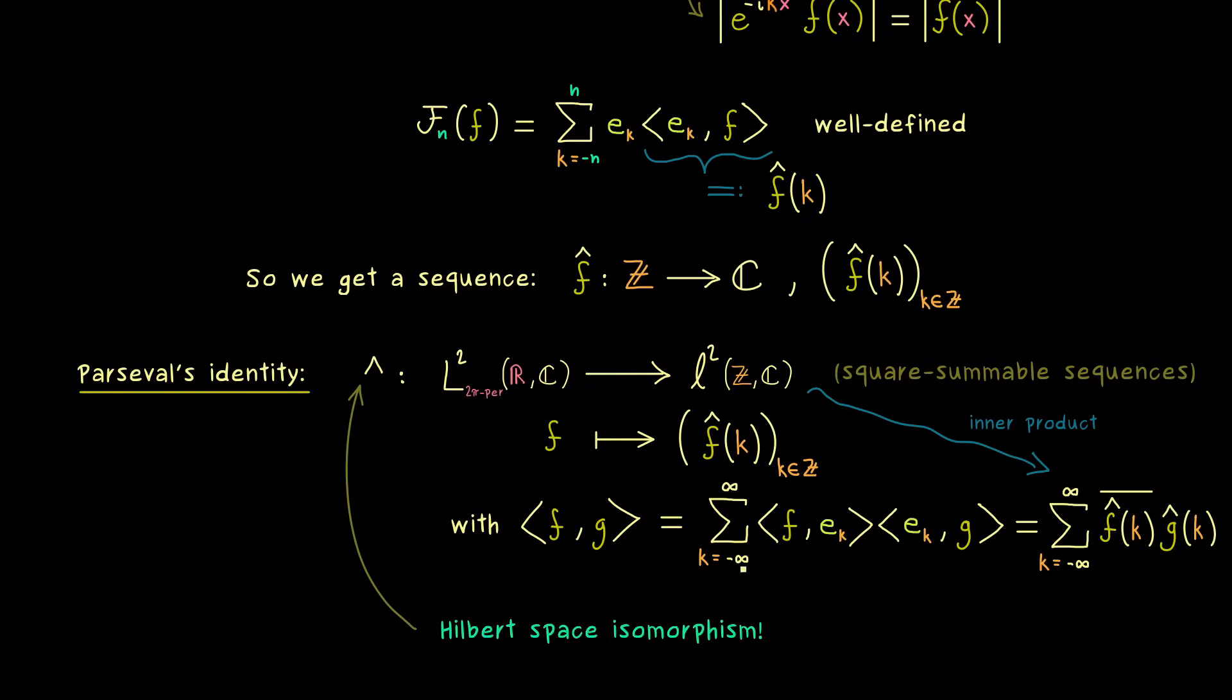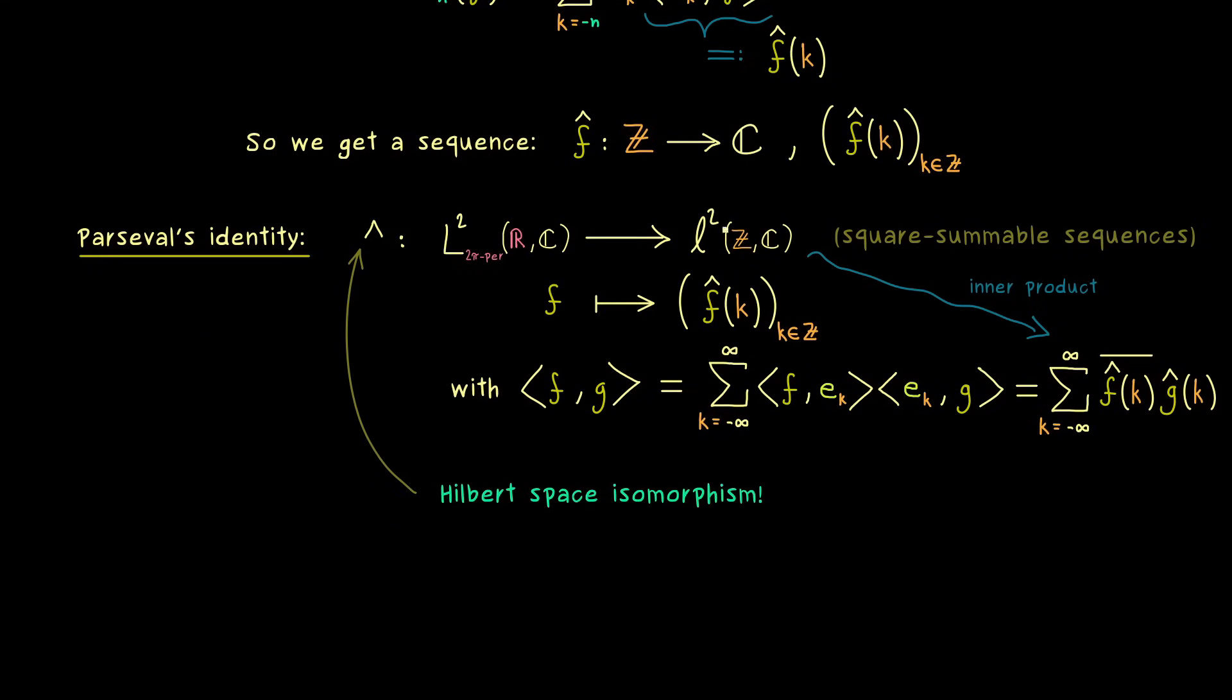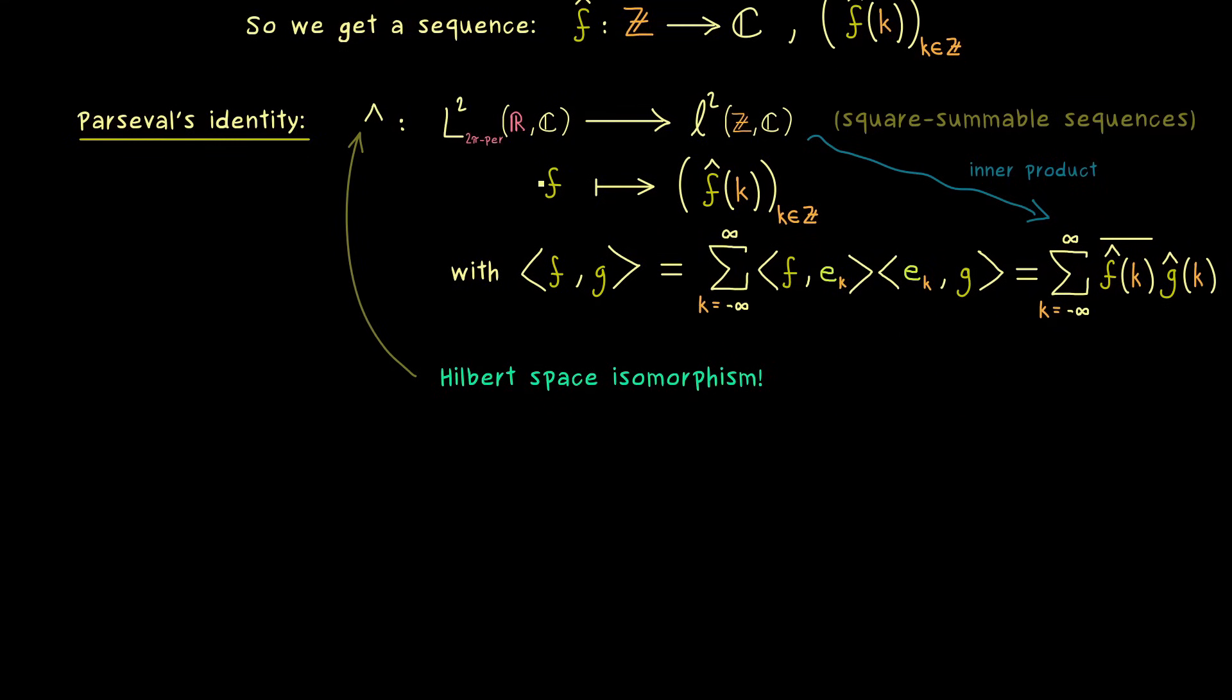So you see Parseval's identity is really nice and it tells us that we can jump between these two spaces as much as we want. However this nice connection will break down when we extend the space on the left hand side. Obviously this has to happen because we don't have this inner product structure anymore in L1.